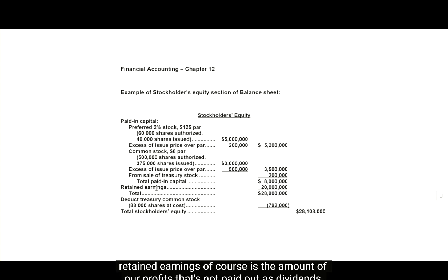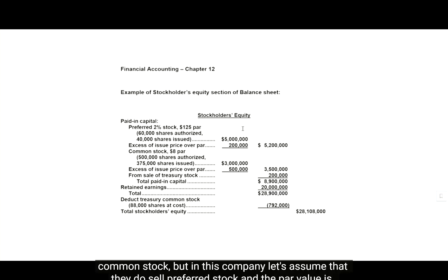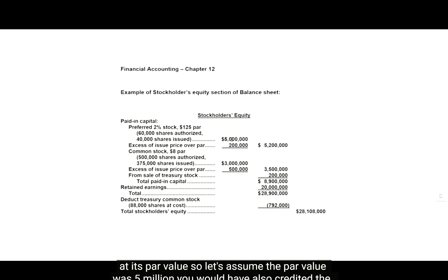The retained earnings, of course, is the amount of our profits that's not paid out as dividends. Now, as we talked about previously, a company can sell both preferred stock and common stock. If they don't sell any preferred stock, we would just skip the preferred stock area and go right to common stock. But in this company, let's assume that they do sell preferred stock and the par value is $125 per share. So when you journalize for it, you would have credited preferred stock at its par value.